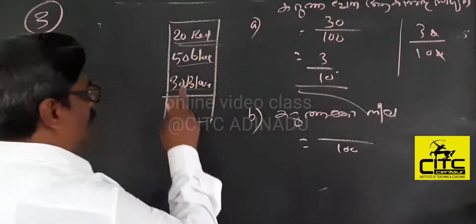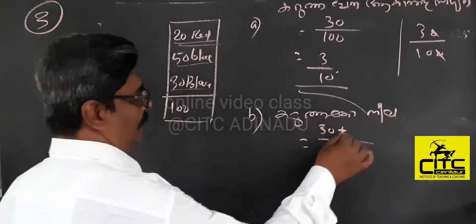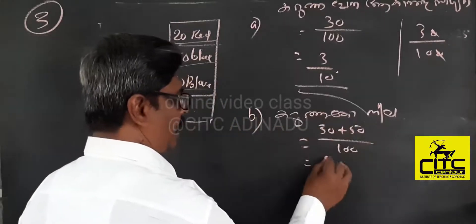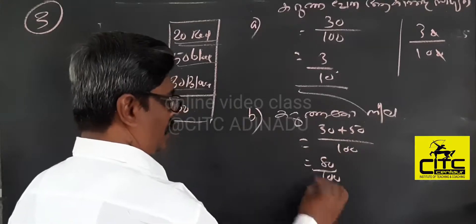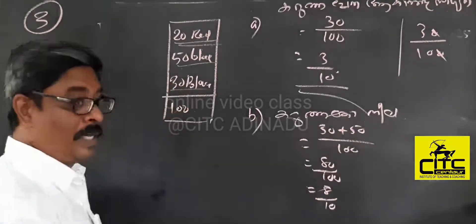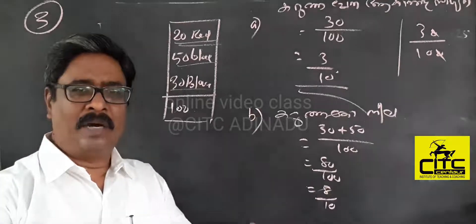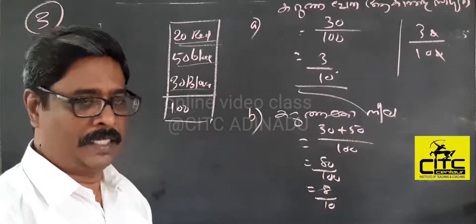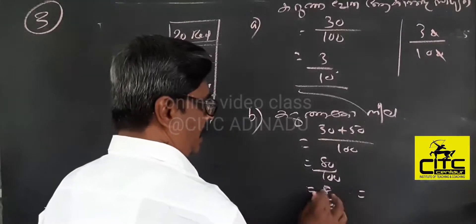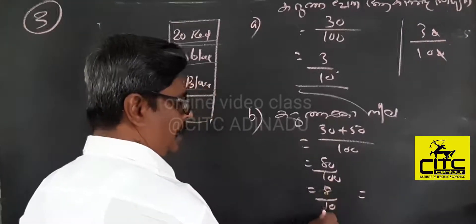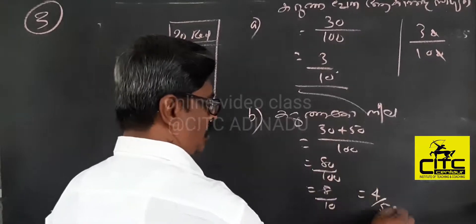The price is 30, and the price is 50, and the price is 50. If you put the price, the price is 80. There are 80, and it's 100, and there are 80. This is the price. If you give the price, you will give the price and price — the price will be 9. If you give the price, you can buy the price. This is 4 by 5.